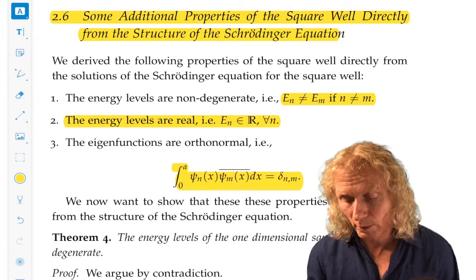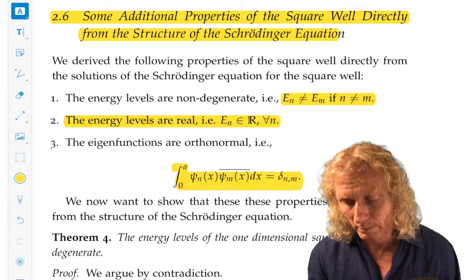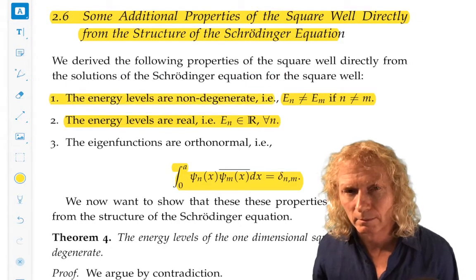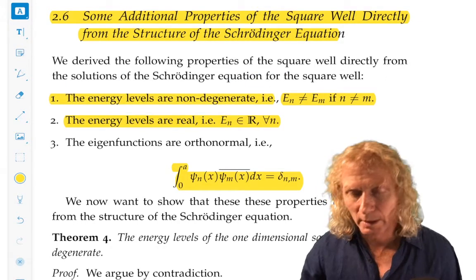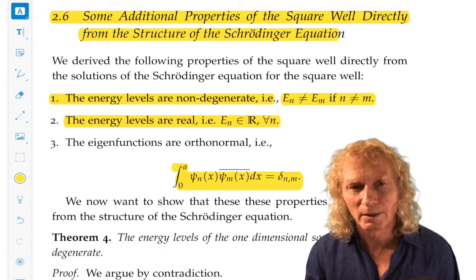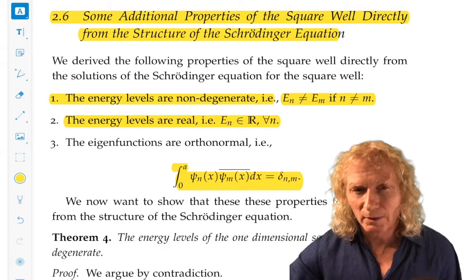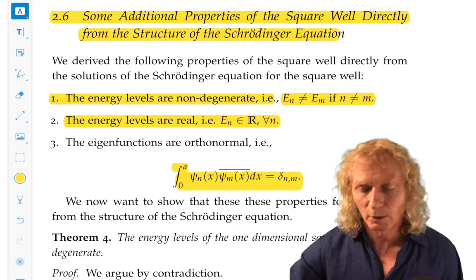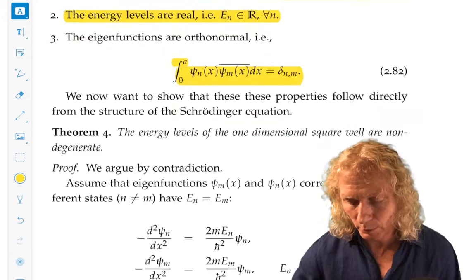But in this case for the square well, we verify this directly. Keep that in mind. It is good to look at this section and go back to the general abstract type of notation from chapter one.